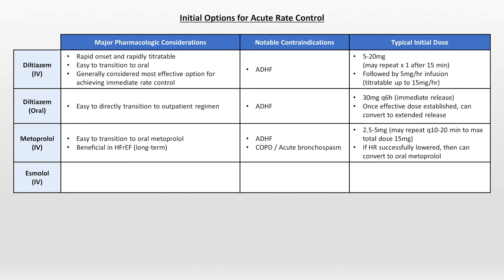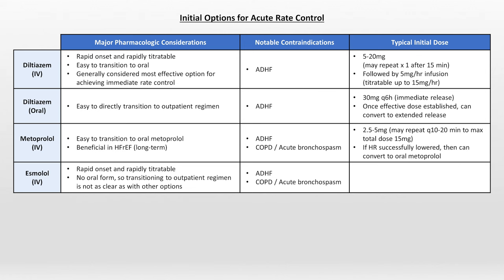Esmolol is another IV beta blocker with an unusually rapid onset and is very rapidly titratable due to its short half-life. There is no oral form of esmolol, so transitioning to an outpatient regimen isn't as straightforward as with other options. Its contraindications are the same as metoprolol. When using it for AFib, it's typical to start with a loading dose of 500 micrograms per kilogram over one minute, followed by a continuous infusion at 50 micrograms per kg per minute, titratable up to a max of 200 micrograms per kilogram per minute.